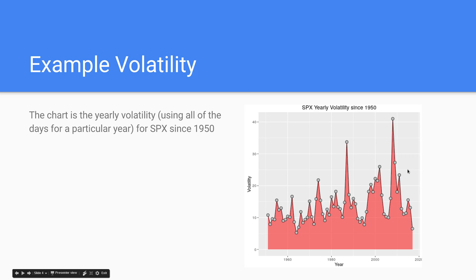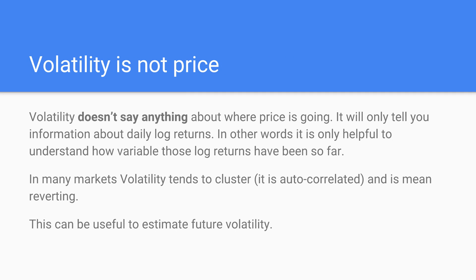So those are the two key properties of volatility: it is autocorrelated and mean-reverting. These two properties, even at a high level, can give you useful ideas about future volatility. In particular, the assumption that next week's volatility will be similar to this week's is a very reasonable and often useful assumption.